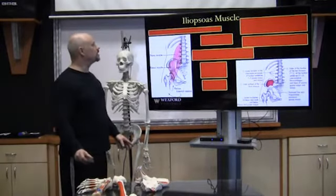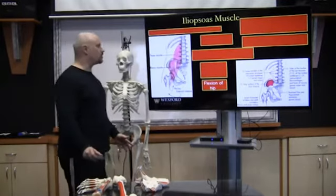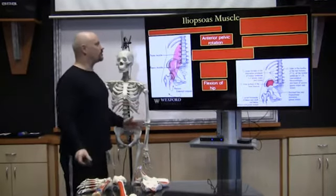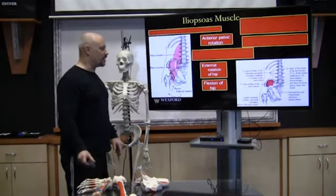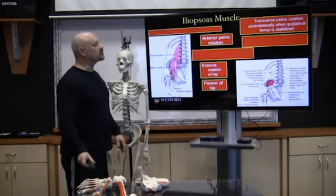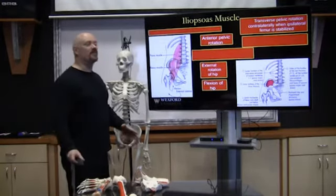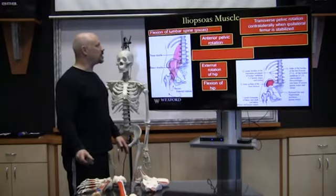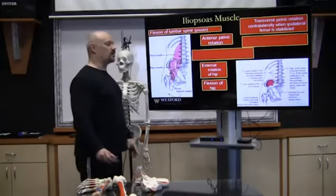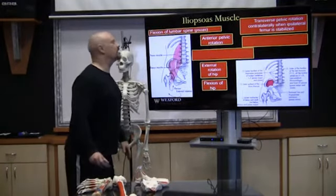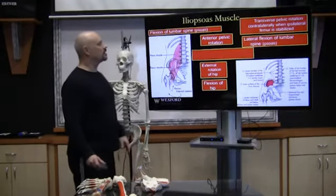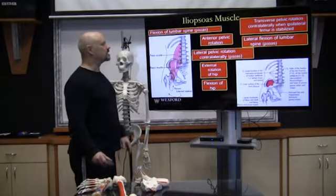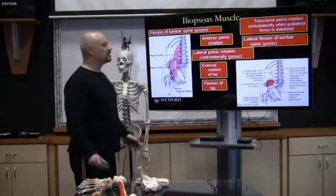The iliopsoas muscle does flexion of the hip and anterior pelvic rotation — pulling the top of the pelvis forward. It also does external rotation of the hip, and transverse pelvic rotation contralateral when the ipsilateral femur is stabilized. The psoas does flexion of the lumbar spine — when it contracts it's attached to the hip, so it will actually flex the lumbar spine. It also does lateral flexion of the lumbar spine and lateral pelvic rotation contralateral.